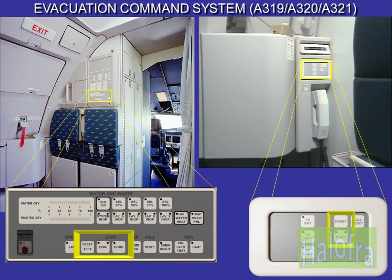The emergency evacuation command may be activated either from the cockpit or the PERSA station. An evacuation signal and a horn reset push button are located at the PERSA station, at the aft left crew station, and in the cockpit.